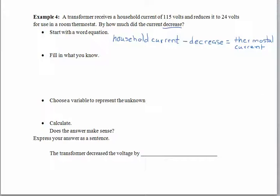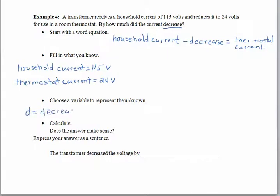Okay, so let's see what we have. A household current. That is 115 volts. We want to keep track of the things we know and the things we don't know. The thermostat current. That's 24 volts. And the thing that we don't know is the decrease. So let's maybe call that D for decrease. All right, so we'll fill everything in when we know it. Household current here is 115. Minus the amount of the decrease, we don't know, but we called it D. Equals the thermostat current, which is 24. So everything stayed exactly in its place from that word equation that we originally wrote.